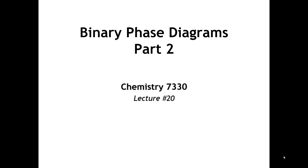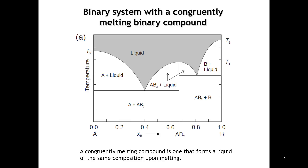Continuing our look at binary phase diagrams, we're now going to introduce an element of complexity in that we are going to allow there to be formation of a compound intermediate between A and B. So if we were to look at this phase diagram, this would be representative of a phase diagram where there's one intermediate composition that forms in between the two end members. For all practical purposes, this phase diagram is very much like the phase diagrams that we were looking at in the last lecture. We can think of this as two eutectic phase diagrams that are stacked side by side.